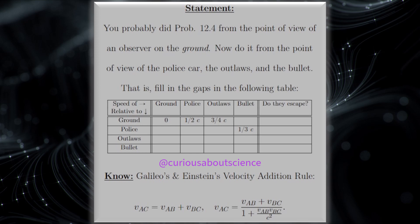Welcome back. Our statement today reads, you probably did problem 12.4 from the point of view of an observer on the ground. Now do it from the point of view of the police car, the outlaws, and the bullet. That is, fill in the gaps in the following table.